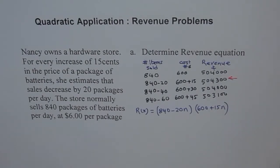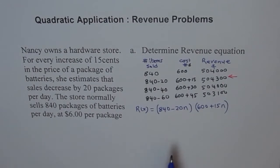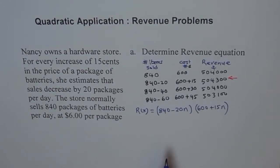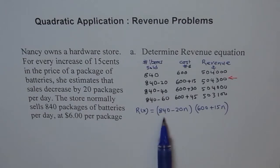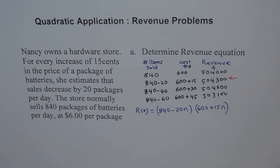If we make n times increases in price, sales reduce by n times 20. So items sold will be (840 − 20n). The cost of each item increases by 15 cents n times, so cost is (600 + 15n). That gives us our revenue function: R = (840 − 20n)(600 + 15n).